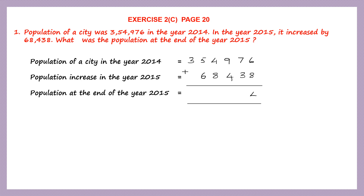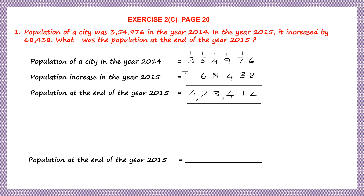So let's do this addition. 6 plus 8 is 14, carry 1. 7 plus 1 is 8, then 9, 10, 11, carry 1. 9 plus 1 is 10, plus 4 is 14, carry 1. 4 plus 1 is 5, 5 plus 8 is 13, carry 1. 5 plus 1 is 6, 6 plus 6 is 12, carry 1. 3 plus 1 is 4. So 4,23,414 is the population at the end of the year 2015.